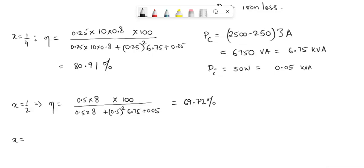For x equals 1, η is 8 divided by 8 plus 6.75 plus 0.05 times 100, which is equal to 54.05%.